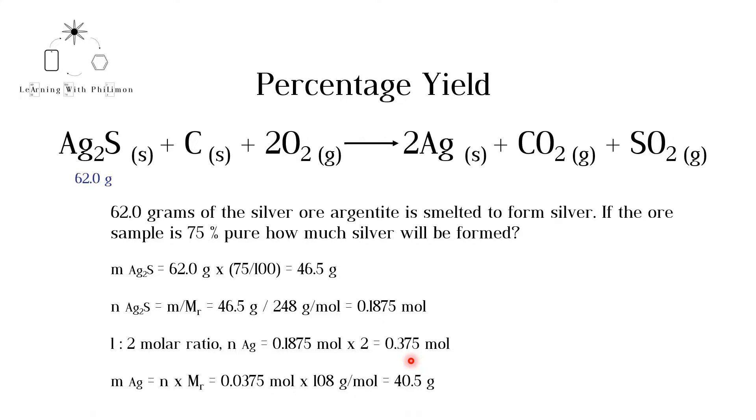0.375 moles of silver will be formed if the percentage yield of this reaction is assumed to be 100%. To calculate the mass, we multiply moles by the molar mass of silver. 40.5 grams of silver are formed from this impure sample of argentite. Note that if the sample were pure, more grams of silver would be formed.